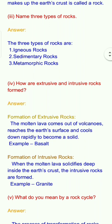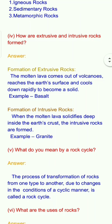Question 4: How are extrusive and intrusive rocks formed? Answer: Formation of extrusive rocks — when lava comes out of volcanoes, it reaches the earth's surface and cools down rapidly to become a solid. Example: basalt. Formation of intrusive rocks — when molten lava solidifies deep inside the earth's crust, intrusive rocks are formed. Example: granite.